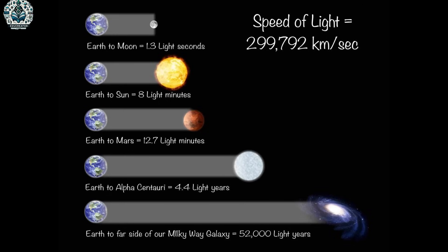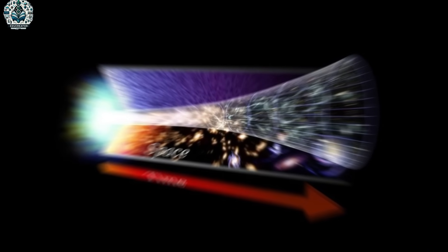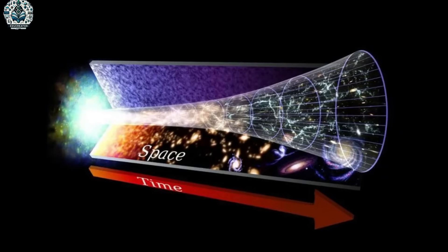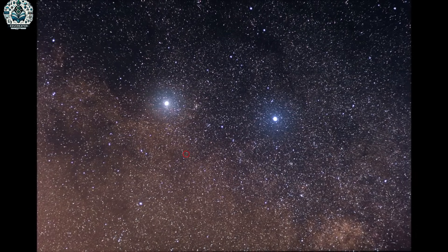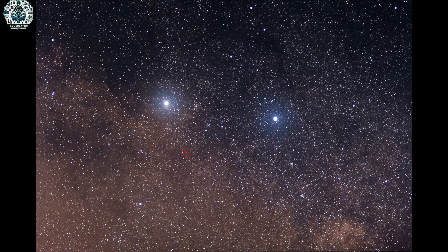The answer lies in the fundamental nature of light and its journey through the vast expanse of space. Light travels at an incredible speed of about 299,792 kilometers per second. Despite this astounding speed, it still takes time for light to traverse the enormous distances between celestial objects and us here on Earth. This means that the light we observe today from distant stars and galaxies is not as it is in our current moment, but as it was when it first embarked on its journey across the cosmos.